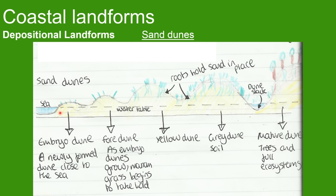Now we're looking at sand dunes moving up the beach. There are different stages. The embryo dune is a newly formed dune. The foredune grows as marram grass begins to take hold. The yellow dune is still quite sandy. The grey dune is similar but roots have grown within the grass, holding the sand together and making it more compact. Sometimes there's a dune slack, where the dune dips below the water table and causes water to form. The mature dune has full ecosystems with trees and plants whose roots hold it all together.